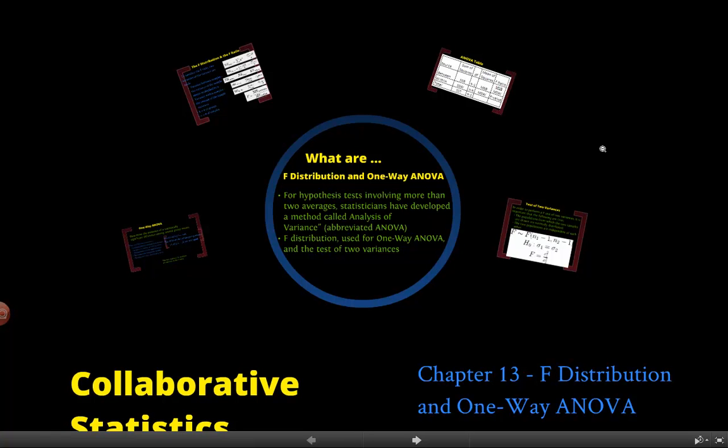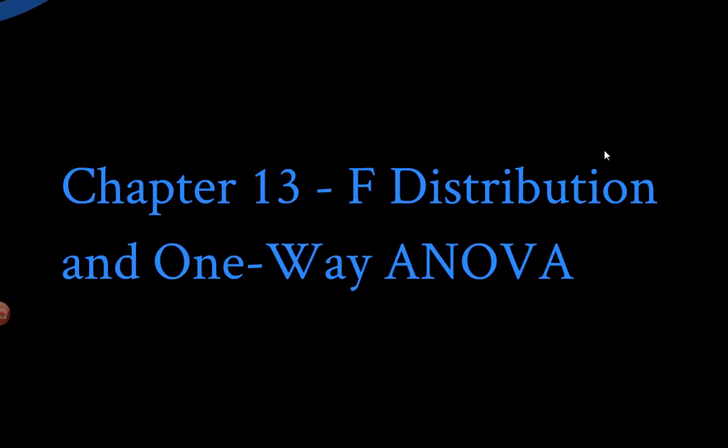Good morning and welcome to Collaborative Statistics. Today we are on chapter 13, which is the F distribution and the ANOVA tables one way. You can do larger ones but we're just going to look at the one way ANOVA table for this book.